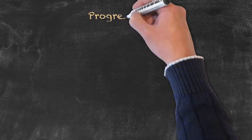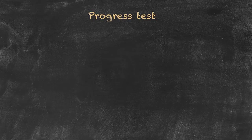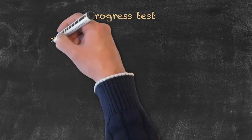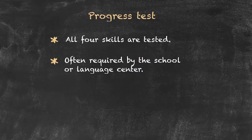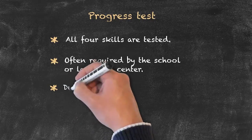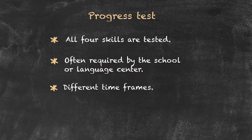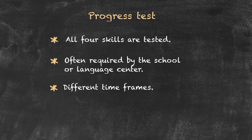The next type of test is called the progress test, and it's one that whatever teaching situation you find yourself in, you're probably going to be involved in one way or another. Typically, all four skills are tested. This type of test is often required by the school or the language centre that you're working in, and even by the parents, to show that learning has taken place. The duration can vary — it could be a particular unit test done when a unit is completed, a term test, half-year, or end of year.